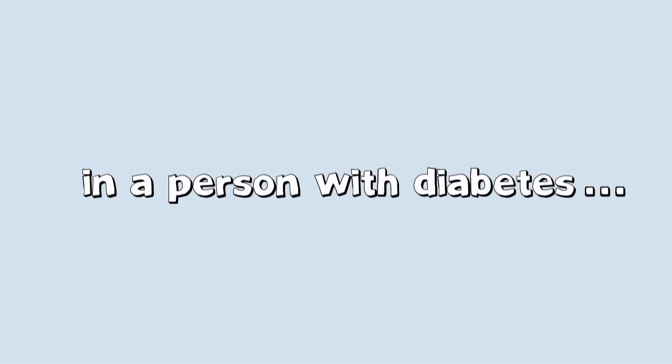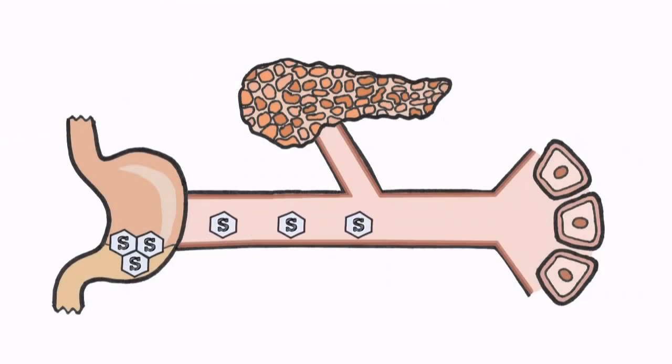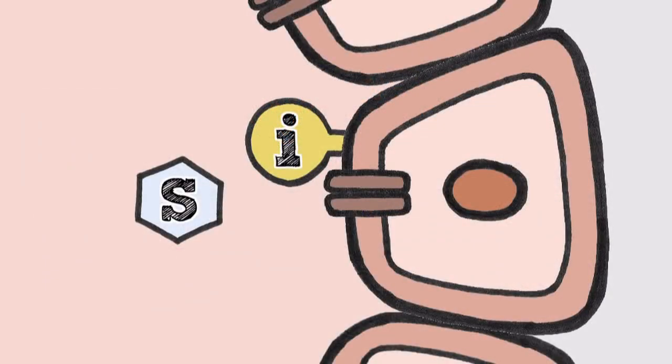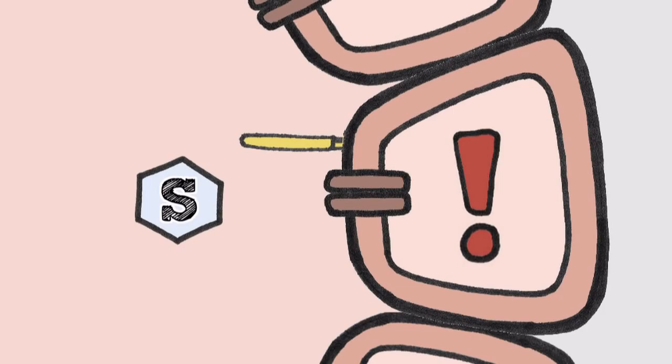Now let's see what happens in a person with diabetes. Sugar enters the bloodstream, but one of two things happens. Either the pancreas does not produce a sufficient quantity of insulin to match the sugar entering the bloodstream, or the body cells do not respond to the insulin that the body is producing.